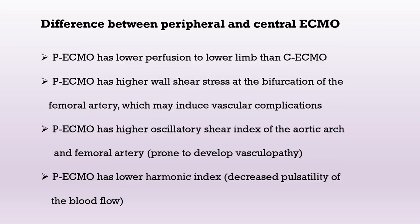In summary, what is the difference between peripheral and central ECMO? Peripheral ECMO has lower perfusion to the lower limb, so limb ischemia is more frequent with peripheral ECMO. Peripheral ECMO has higher shear stress at the perfusion of the femoral artery, inducing vascular complications, as well as high oscillatory shear stress of the aortic arch and femoral artery, making it prone to vasculopathy. Peripheral ECMO also has a lower harmonic index, decreasing the pulsatility of blood flow. However, central ECMO is more invasive, with more bleeding, more infection, and it is not straightforward to perform with an open sternotomy.